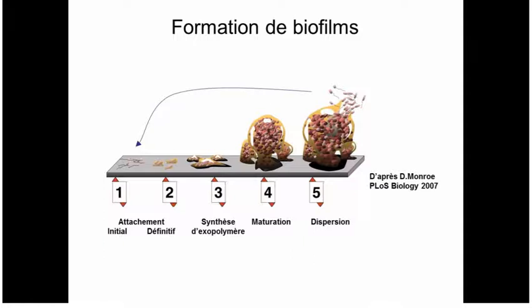If you only look at bacterial growth in liquid culture, you understand half of their lifestyle but not the whole thing. The dispersion stage is also a controlled process — it requires expression of particular adhesins, genes involved in exopolymer synthesis, and enzymes that can break down the polymer to allow bacteria to escape. It's not just that the biofilm gets too big and gets washed off when you clean your shower curtain.